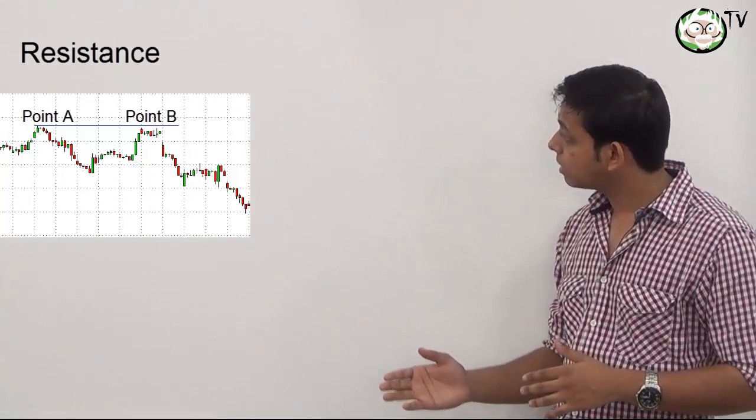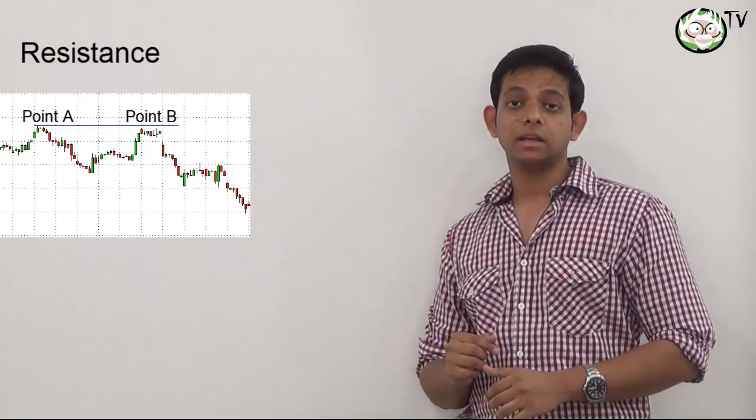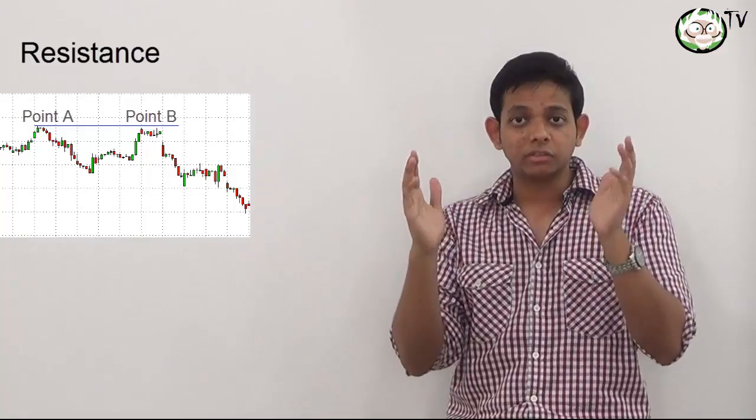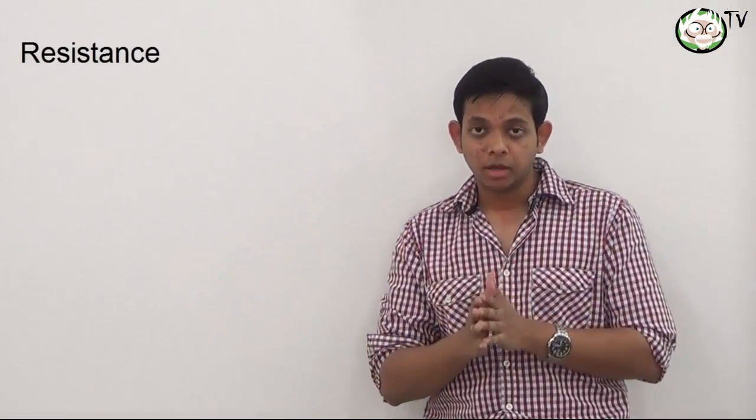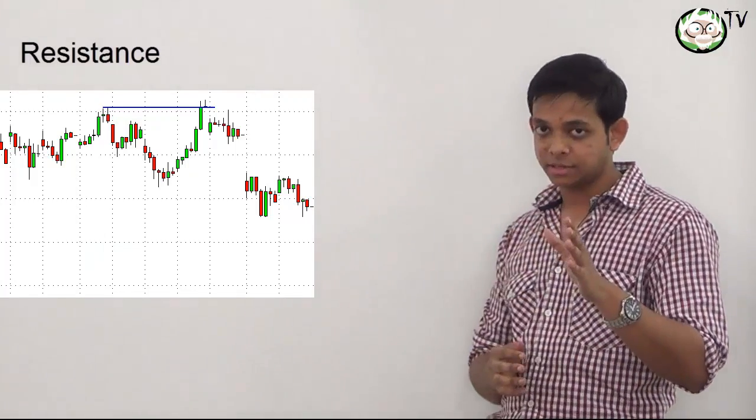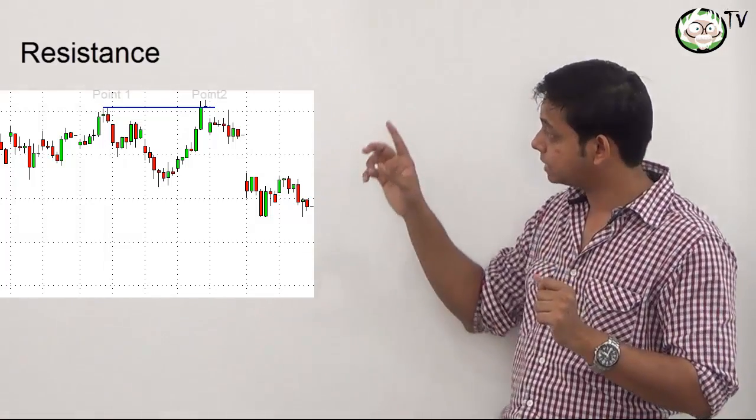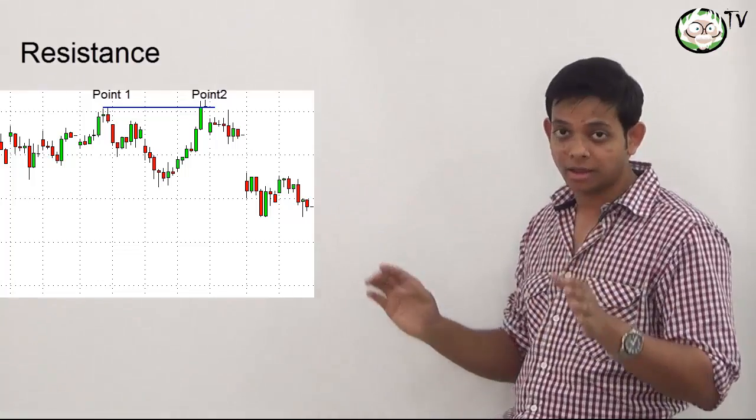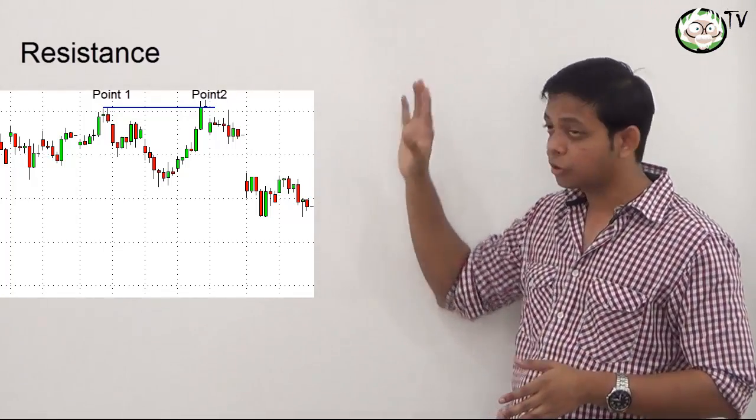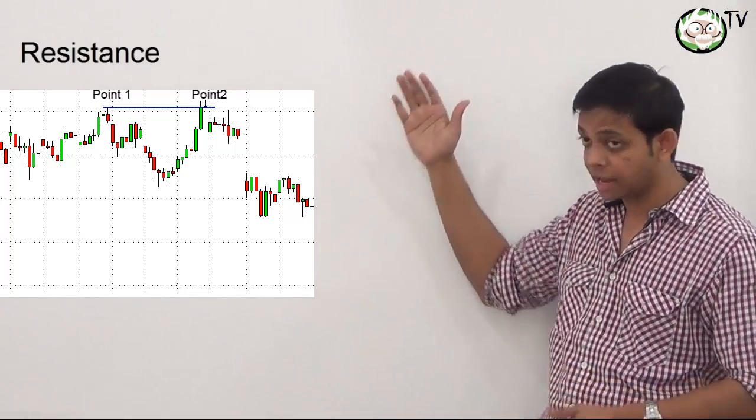Prices then carried on upwards, just touched the blue line, and this is the point where we expect the market to reverse and start falling because that is an area of supply. Now here is another example of a resistance point.